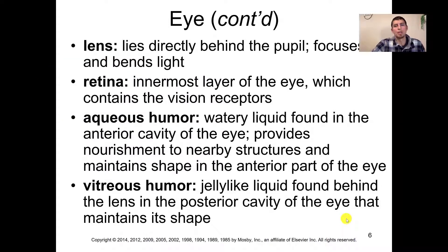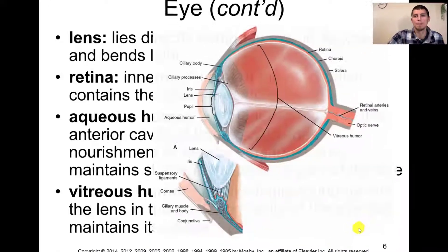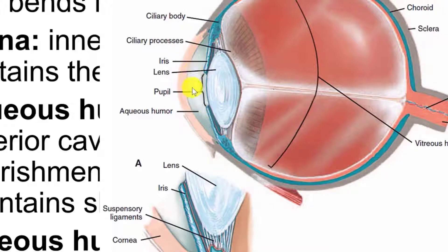We have two portions of the eye called the aqueous humor and the vitreous humor. The aqueous humor — we get the term aqueous from water — is a watery liquid found in the anterior or front portion of the eye. It provides nourishment and also helps maintain the shape of the eye. Here you can see the aqueous humor just underneath the cornea, before you get to the iris — that watery pouch giving the eye its convex shape.